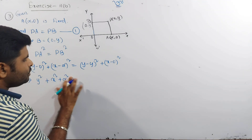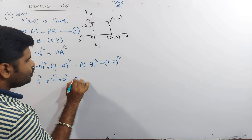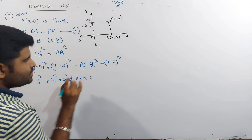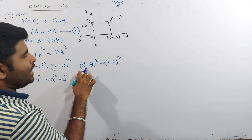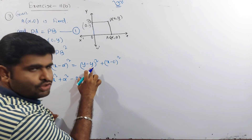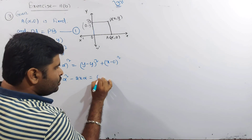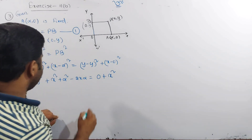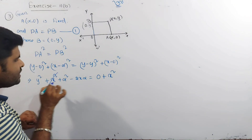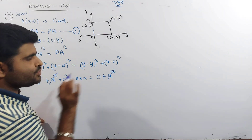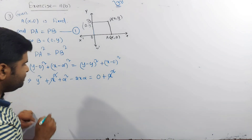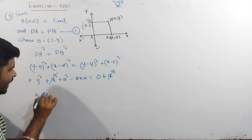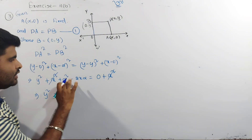Expanding: y² + x² + α² − 2xα = x². Both sides have x², so they cancel. Therefore y² = 2xα − α².